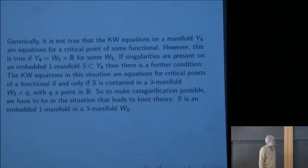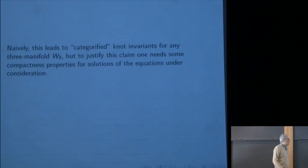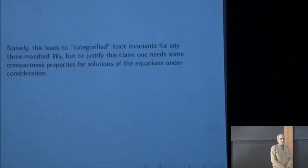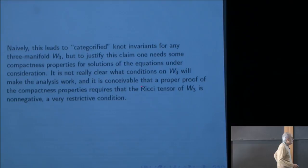To make categorification possible, we have to be in the situation that leads to knot theory — S is an embedded 1-manifold in a three-manifold. Naively this leads to categorified knot invariants for any three-manifold W^3. But mathematically there are subtleties. When one investigates compactness properties, one runs into the Ricci tensor, and it might be that we need the Ricci tensor to be non-negative, a very restrictive condition. On the physics side there are also some subtleties.